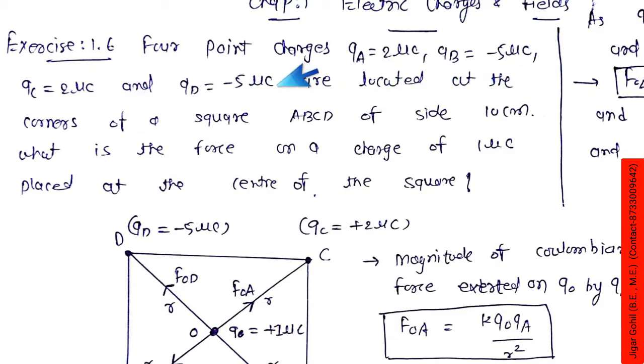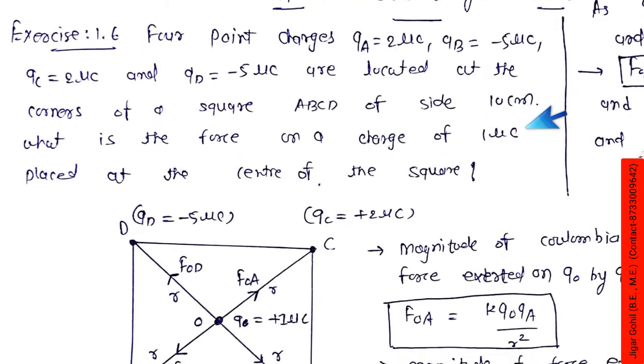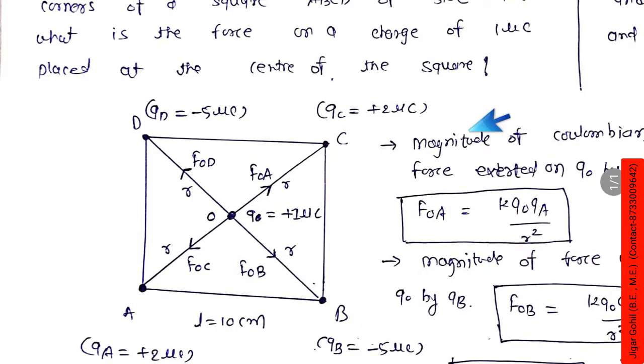And qd = -5 microcoulomb are located at the corners of a square ABCD of side 10 centimeter. So in the question, four charges are placed here at the corners of this square ABCD.